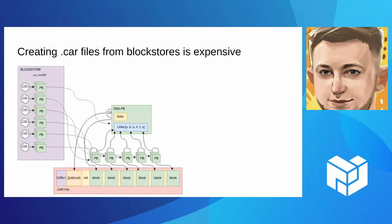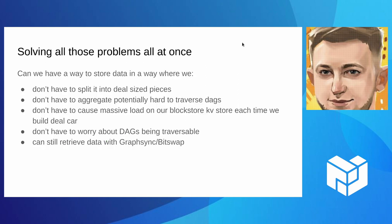My problem with the current way of doing things is that usually when you create a CAR file, you're probably doing that from a block store, which is just a KV store. Each time you create a CAR file, you're doing tens of thousands to millions of reads per CAR file, depending on how big your IPLD blocks are on average. That is very expensive, especially if you want to do multiple replicas of your files — doing millions of reads per second is not easy.